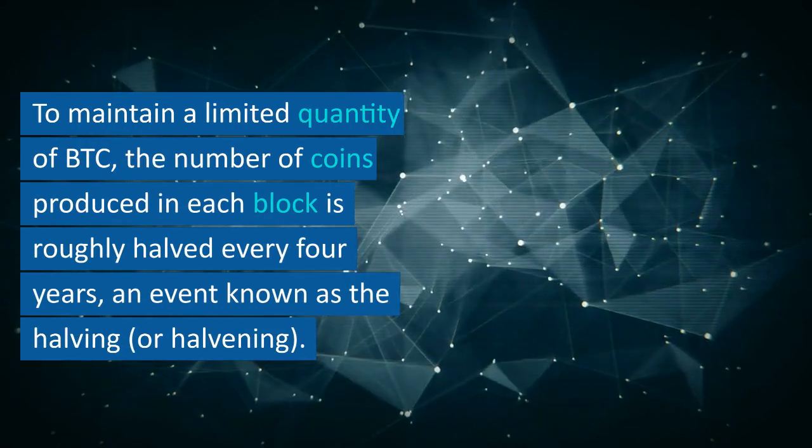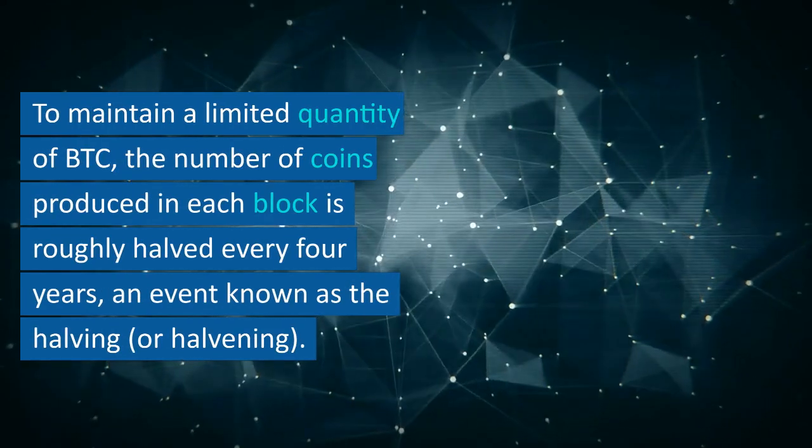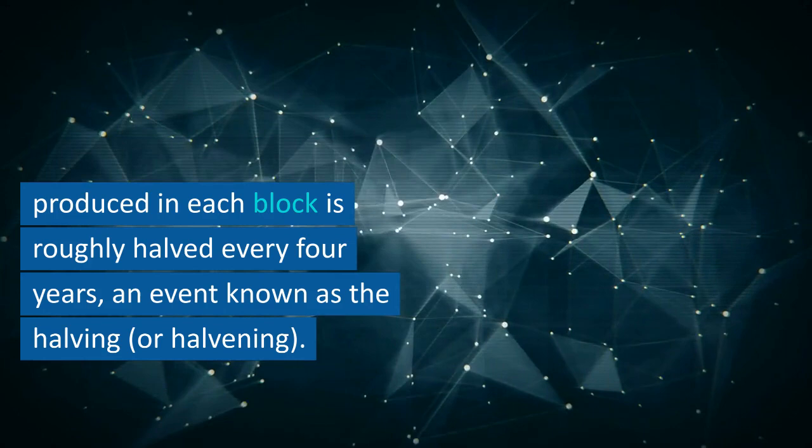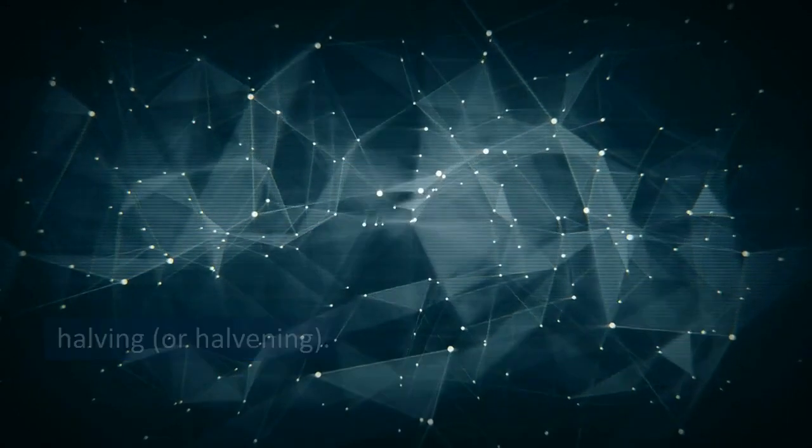To maintain a limited quantity of BTC, the number of coins produced in each block is roughly halved every four years, an event known as the halving, or halvening.